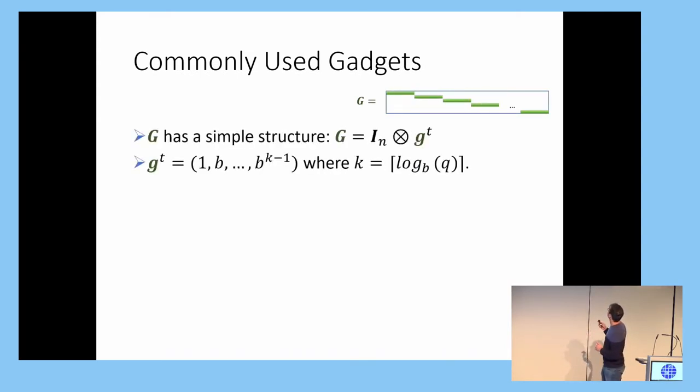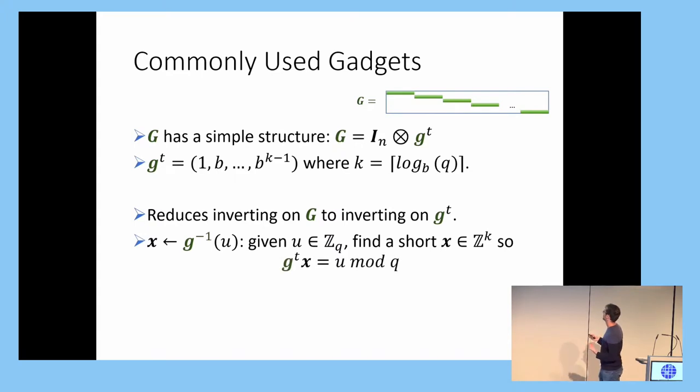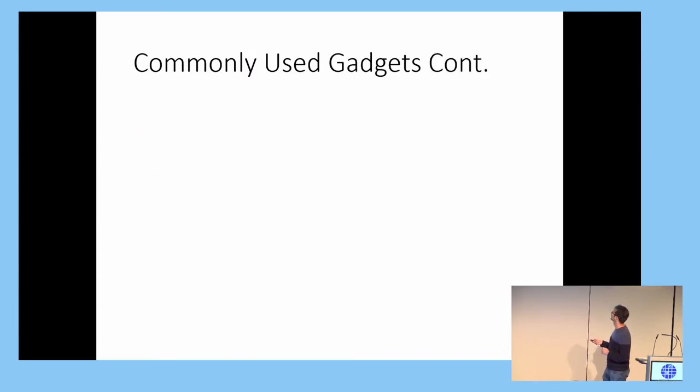All of our gadgets are going to have the same structure. It's going to be this block diagonal matrix where the non-zero blocks are these power of B row vectors. And if there's too many parameters here, you can always think of B as 2. This corresponds exactly to a bit decomposition. Now, what this does is it reduces inverting on the large matrix G to n parallel instances of inverting on the small row vector G. So now our notation is going to be x is going to be sampled from the small G inverse. And now the input is going to be a number modulo Q, integer modulo Q.